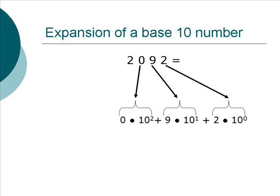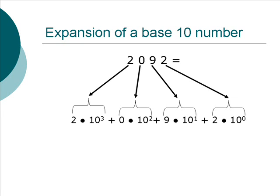The 0 means 0 one-hundredths, that is 0 times 10 squared, 10 squared being 100. Finally, we come to the first 2, which means 2 one-thousands. Another way of writing 1,000 is 10 cubed, or 10 to the power of 3. So our total expansion is 2 one-thousands plus 0 one-hundredths plus 9 tens plus 2 ones.